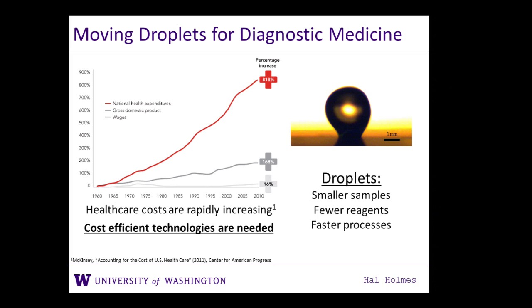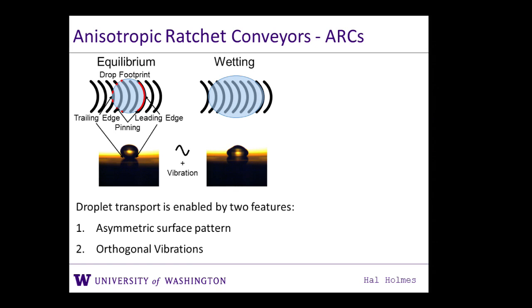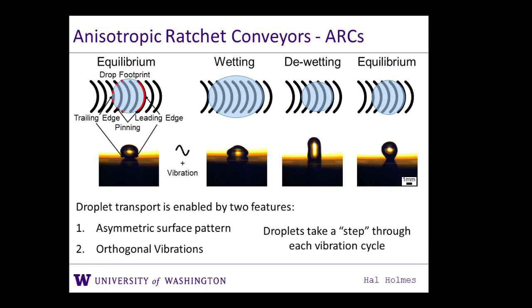In the Böhringer lab, we have a new type of microfluidic system that handles liquids as small discrete droplets. Working with droplets, we can use smaller samples from patients, requiring fewer reagents — the expensive biological components in diagnostic devices. The small sample size and large surface area also allow faster processes. Our ARC system enables droplet transport through two key features: an asymmetric surface pattern composed of hydrophilic rungs on a hydrophobic background, creating a difference in pinning forces on the leading and trailing edges; and an orthogonal vibration applied to the substrate beneath the droplet, causing it to cycle through wetting, de-wetting, and equilibrium phases.